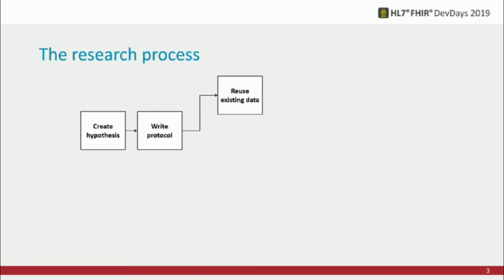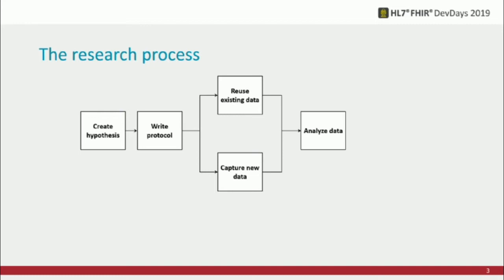When the protocol gets approved, you start looking for either existing data or you start seeing patients. In prospective research, for example, you give patients the medication from month zero to month 24, and every two months you do measurements and collect data from these patients. You send surveys and use data from an existing source like a laboratory information management system. Then you combine all these data sets in a single SPSS file or other statistical analysis format and do your statistical analysis.